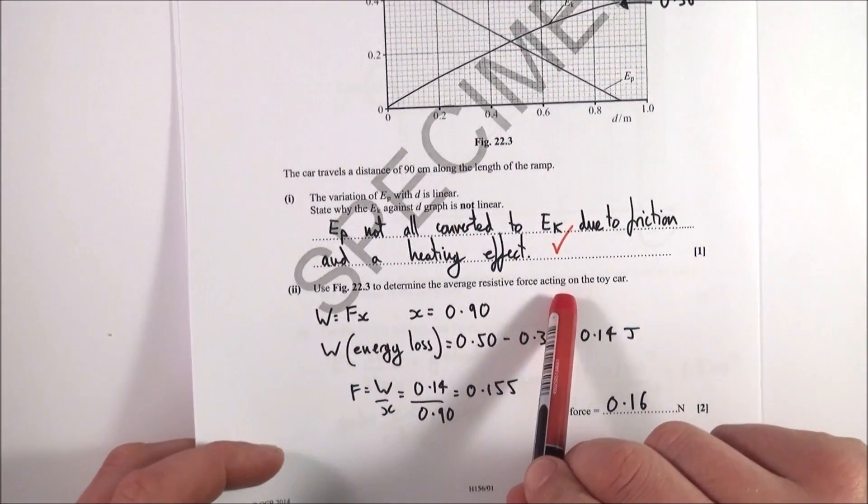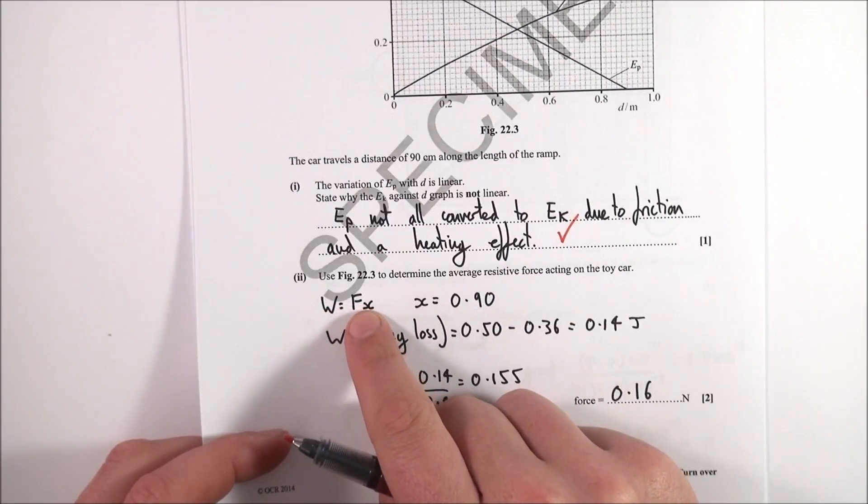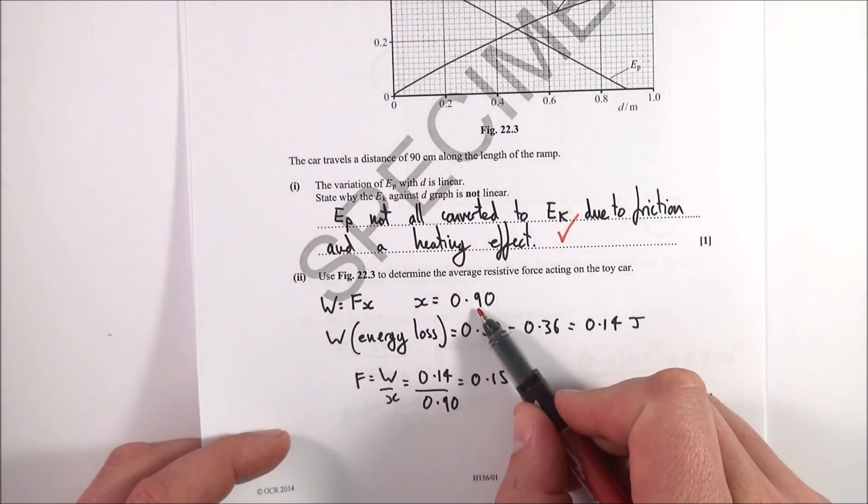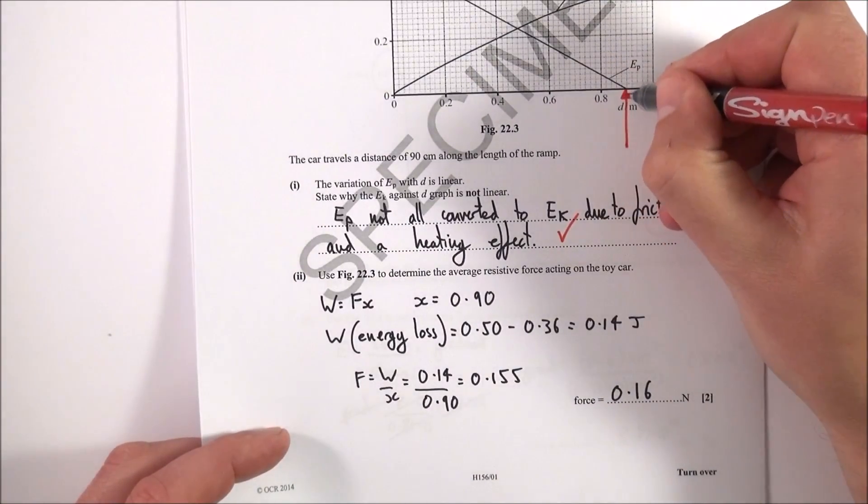x is equal to 90 centimeters, so 0.9 meters, which is what I read off the graph just up here.